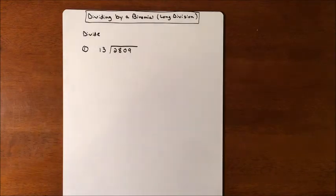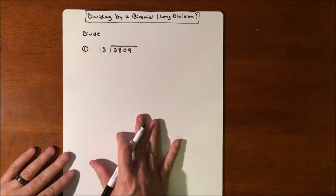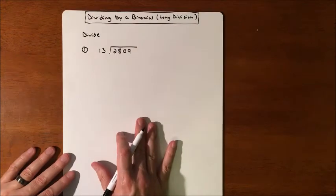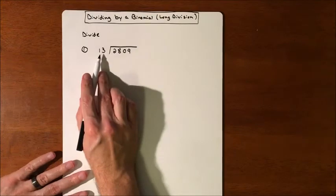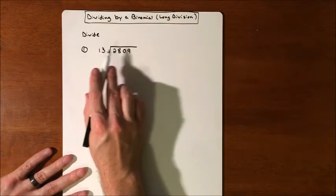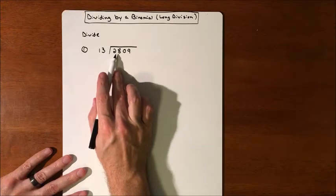Let's make sure we have the concept of how this long division works because it's going to be exactly the same idea, the same concept when we start using polynomials and binomials. Whatever you're dividing by goes on the outside, whatever you're dividing into goes on the inside. We are trying to make 13 get as close as we can to 28 without going over.